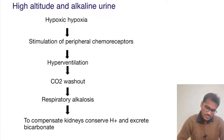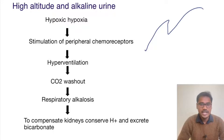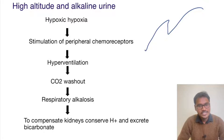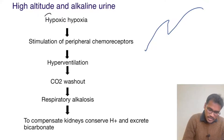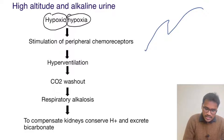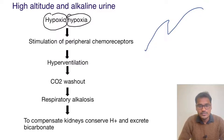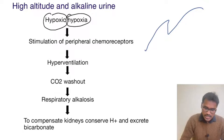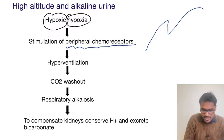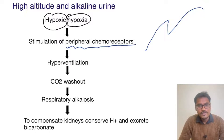What happens in high altitude? Suppose a person is climbing high mountains. The problem is that the availability of oxygen is very very low because the barometric pressure is low. So oxygen is very low, which leads to hypoxic conditions. This is a form of hypoxic hypoxia — due to less availability of oxygen, hypoxia is happening. Whenever there is hypoxic hypoxia, it will lead to stimulation of peripheral chemoreceptors.